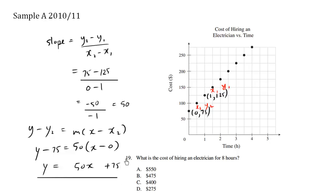So now we can plug in 8. We get y equals 50 times 8 plus 75. So 50 times 8 is 400. 400 plus 75 is 475 dollars. So when electrician works for 8 hours, we're going to be charged 475 dollars, which is choice B.